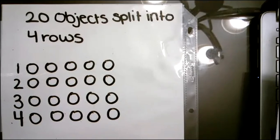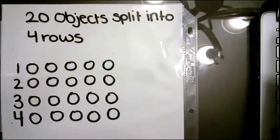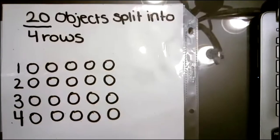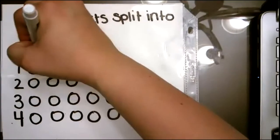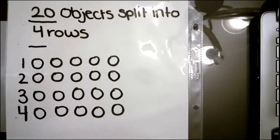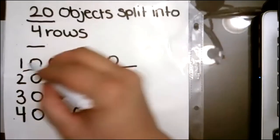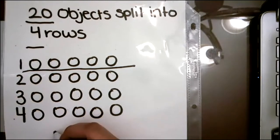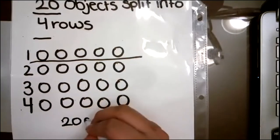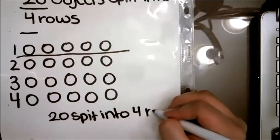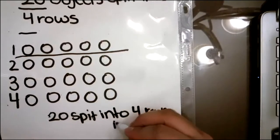So now I put all 20 of my objects in each row. So we started with 20, and we split them into four rows. So we have one, two, three, four. How many are in each row? Right. We have five in each row. One, two, three, four, five. So 20 split into four rows is five.